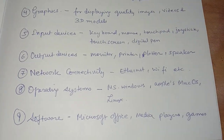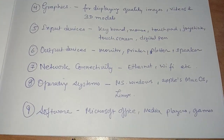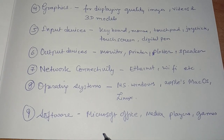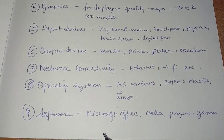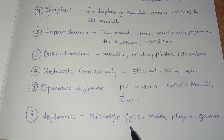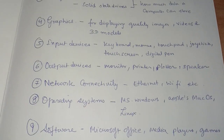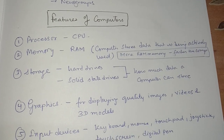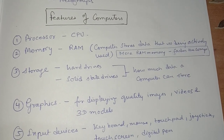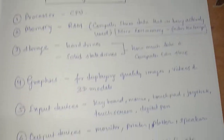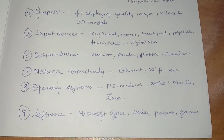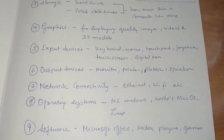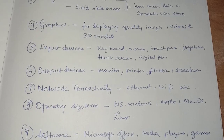Regarding software, consider what is pre-installed or what you want to install — such as Microsoft Office, media players, and games. These are the features of a computer you need to look for when making a purchase.